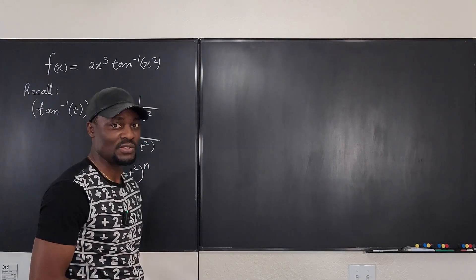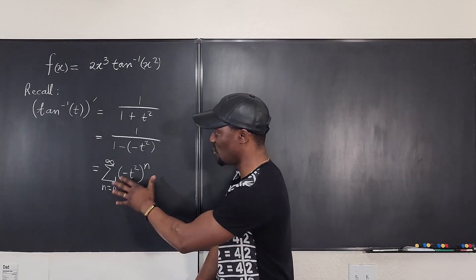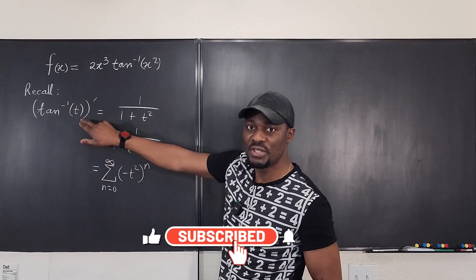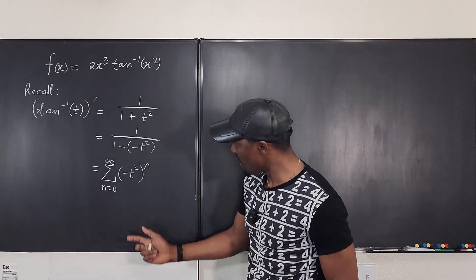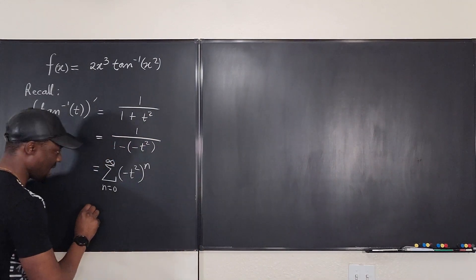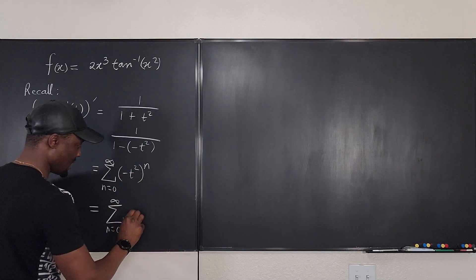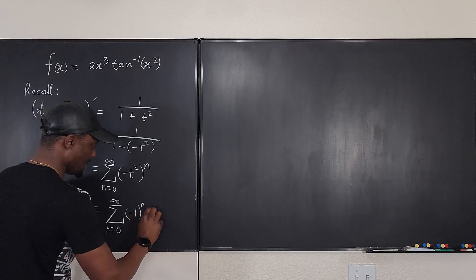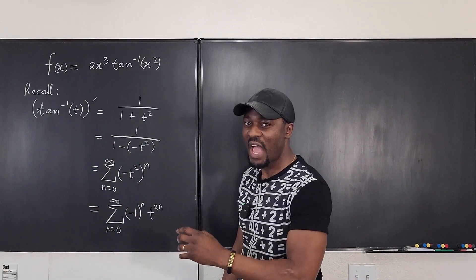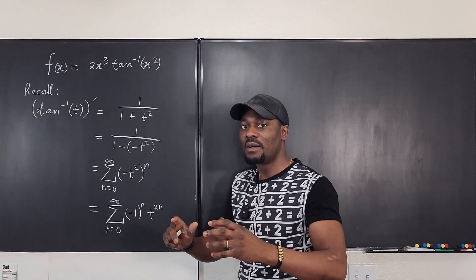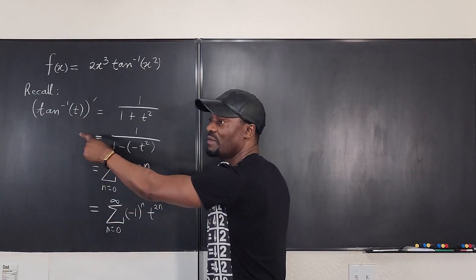If you want to see the full rationale behind this, I'll put a link in the description. The focus here is how to use the derivative of arctan to find the power series for arctan itself. Let's simplify: separating the terms gives us the sum from n=0 to ∞ of (−1)ⁿ·t^(2n). What we have right now is the power series for the derivative of arctan, but we actually want the power series for arctan itself.